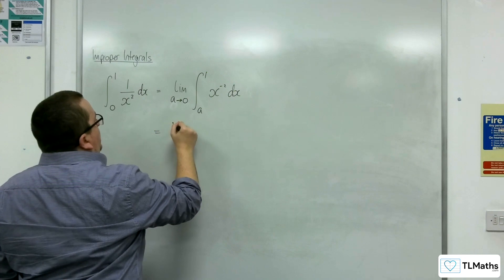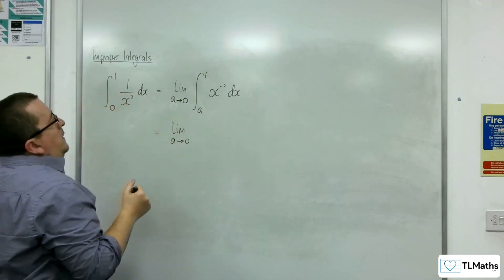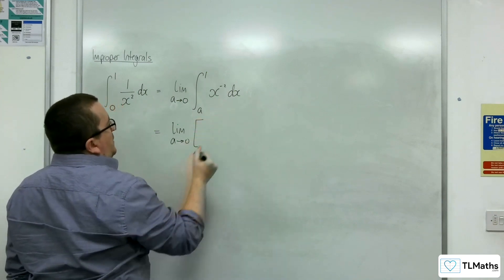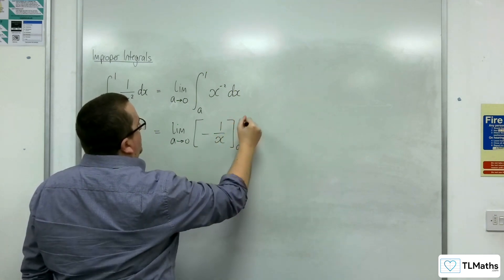So we can write this as the limit as a tends to 0 of, now integrating this, add 1 to the power divided by the new power, we're going to get minus 1 over x, evaluated between a and 1.